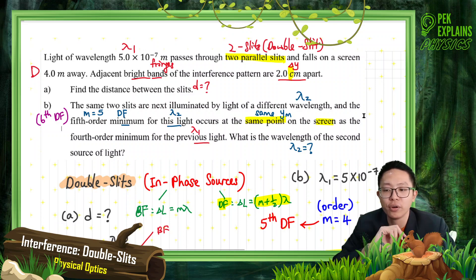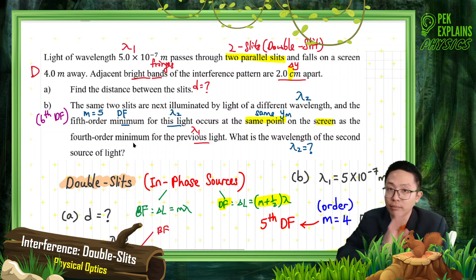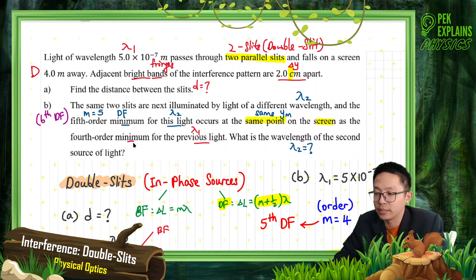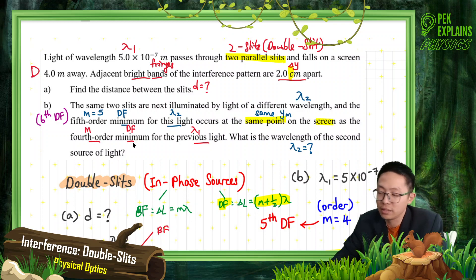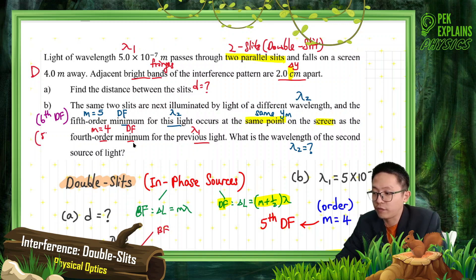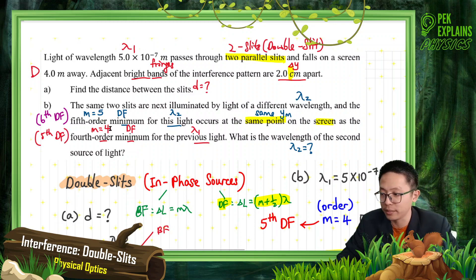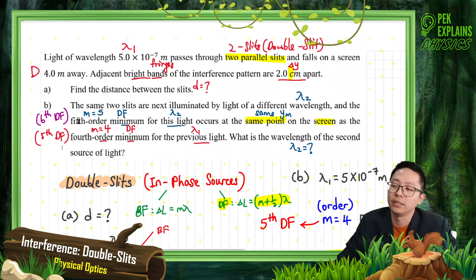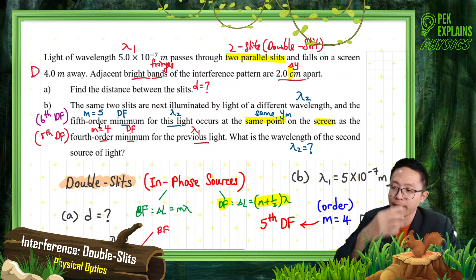Fifth order minimum of this light occurs at the same point as the fourth order minimum of the previous light. Both are dark fringe. The important things: you must know the M value, and which formula to use — Mλ or (M + ½)λ — and whether it's double slit or single slit, in-phase or anti-phase source. These are all very important.